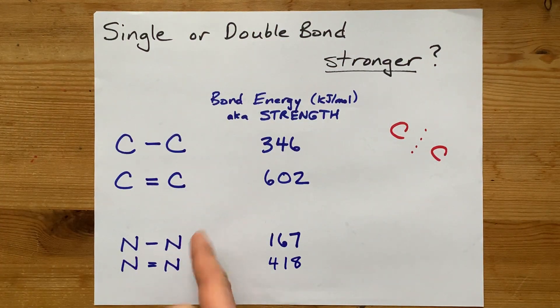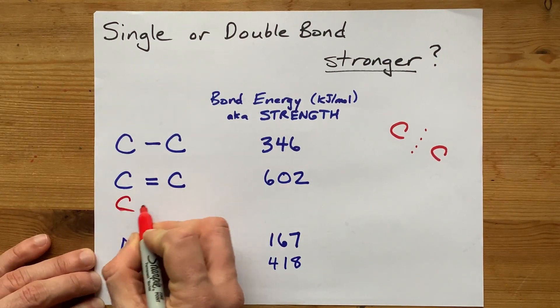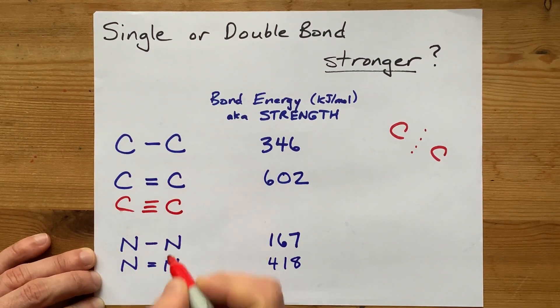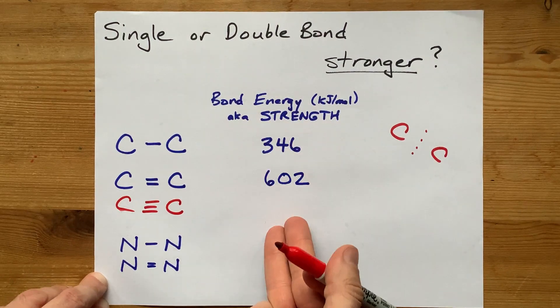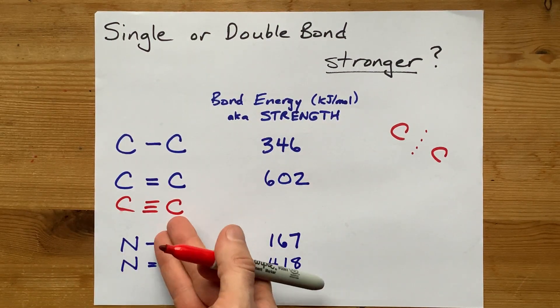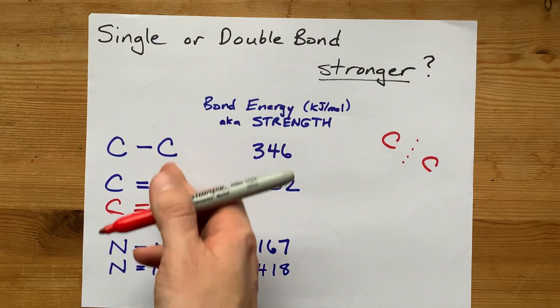This is also true for nitrogen. And you can also probably guess that if it was a triple bond, it would require even more energy. A triple bond between two atoms is stronger than the double, which is stronger than the single.